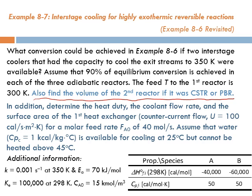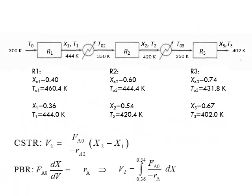In the additional information, we do need a rate constant — we need the kinetic data as well as the thermodynamic data. If it was a CSTR, the design equation would be V2 = FnA0 / (-rA2) × (X2 - X1). That will give you the volume of the CSTR.